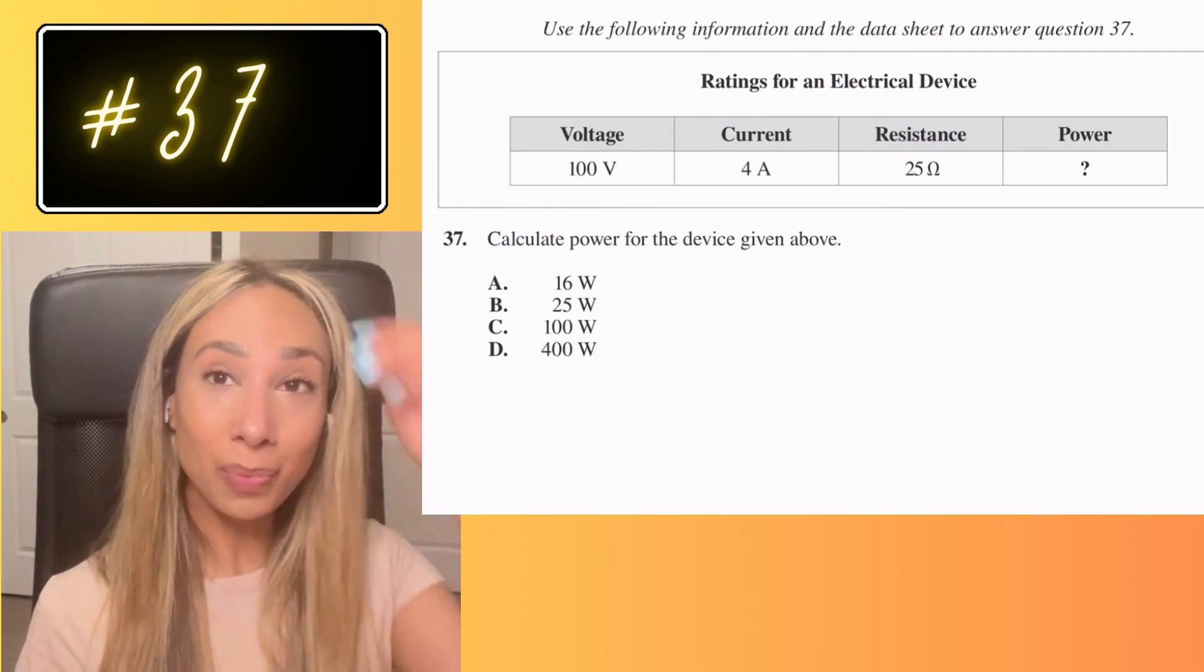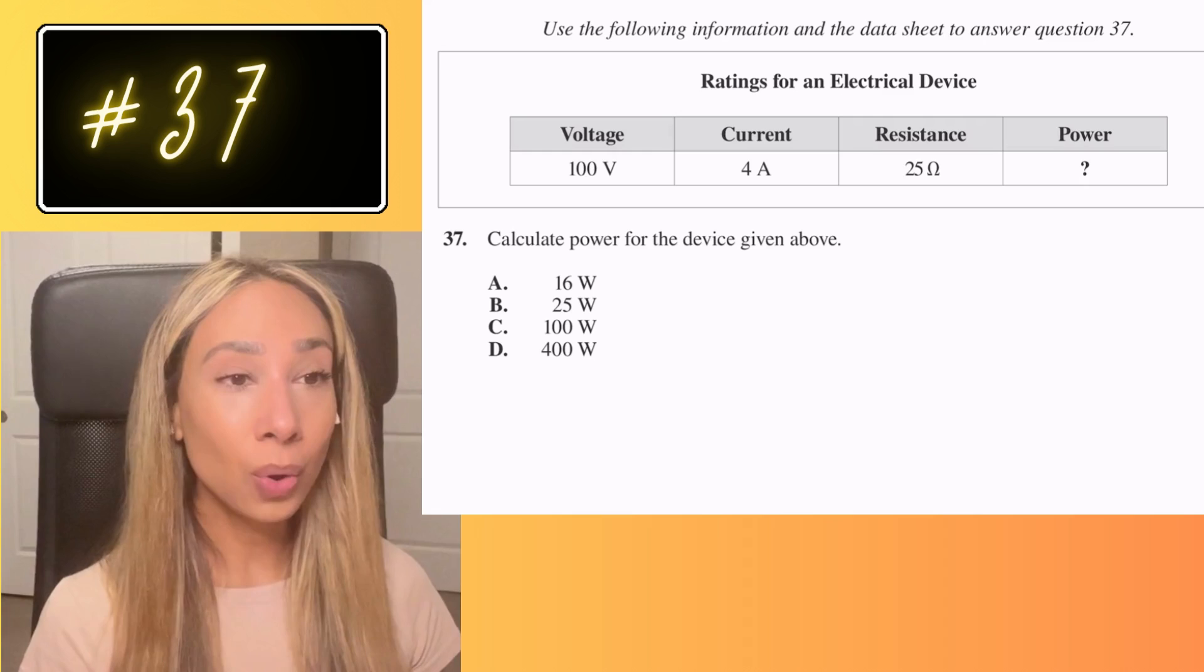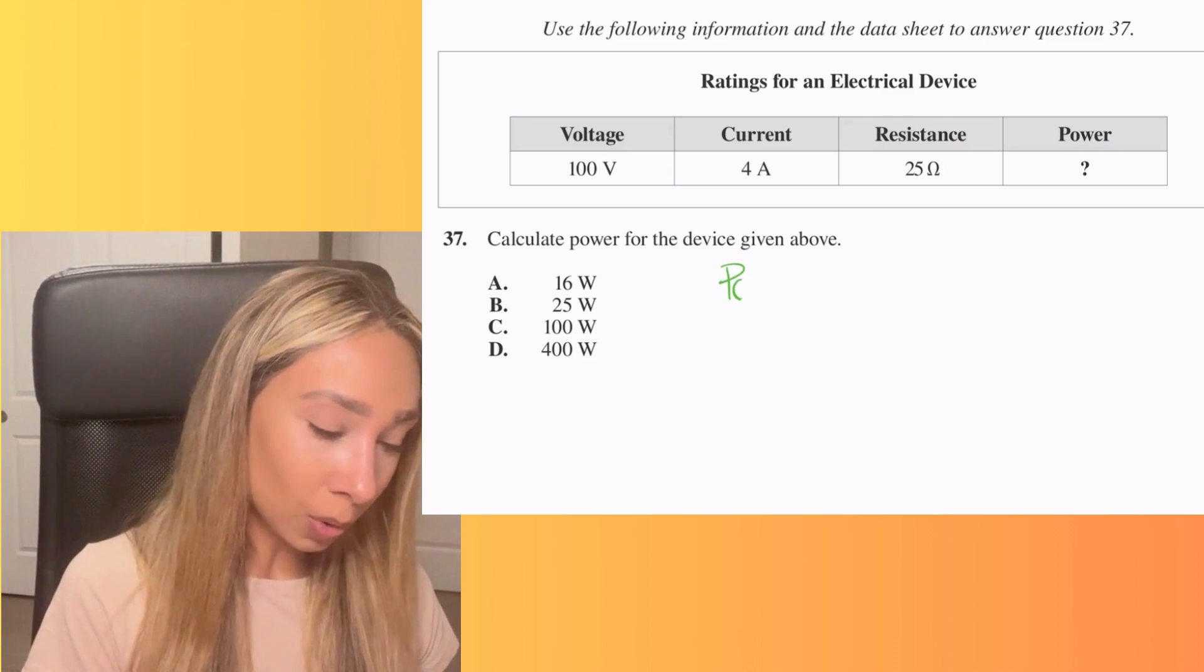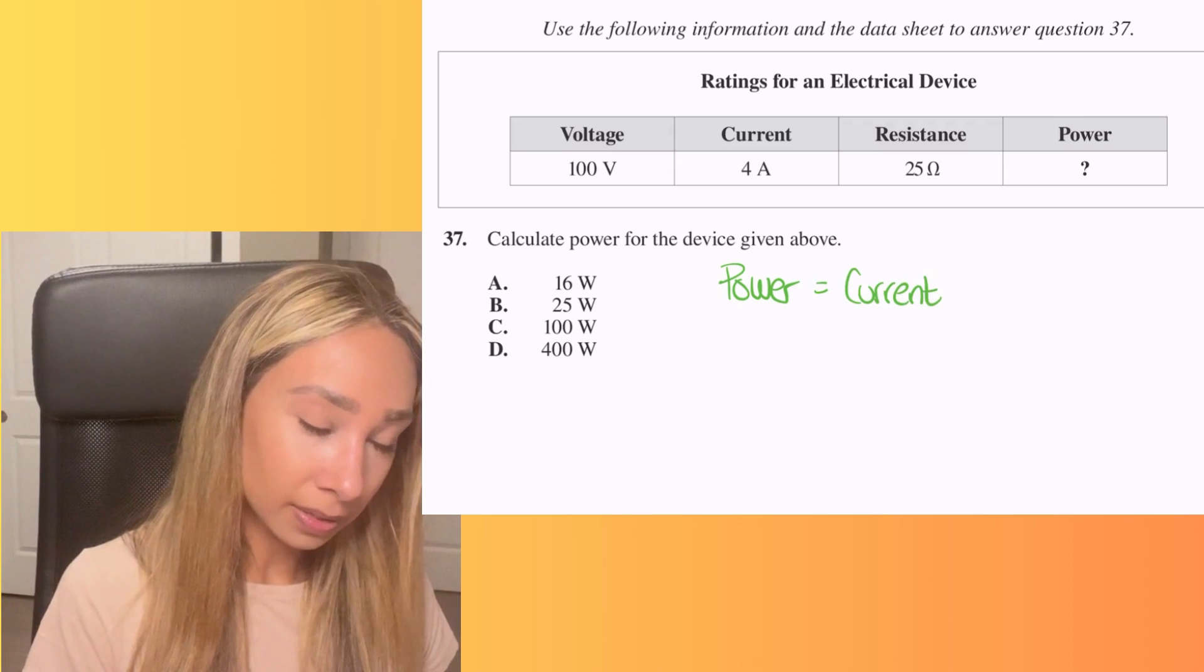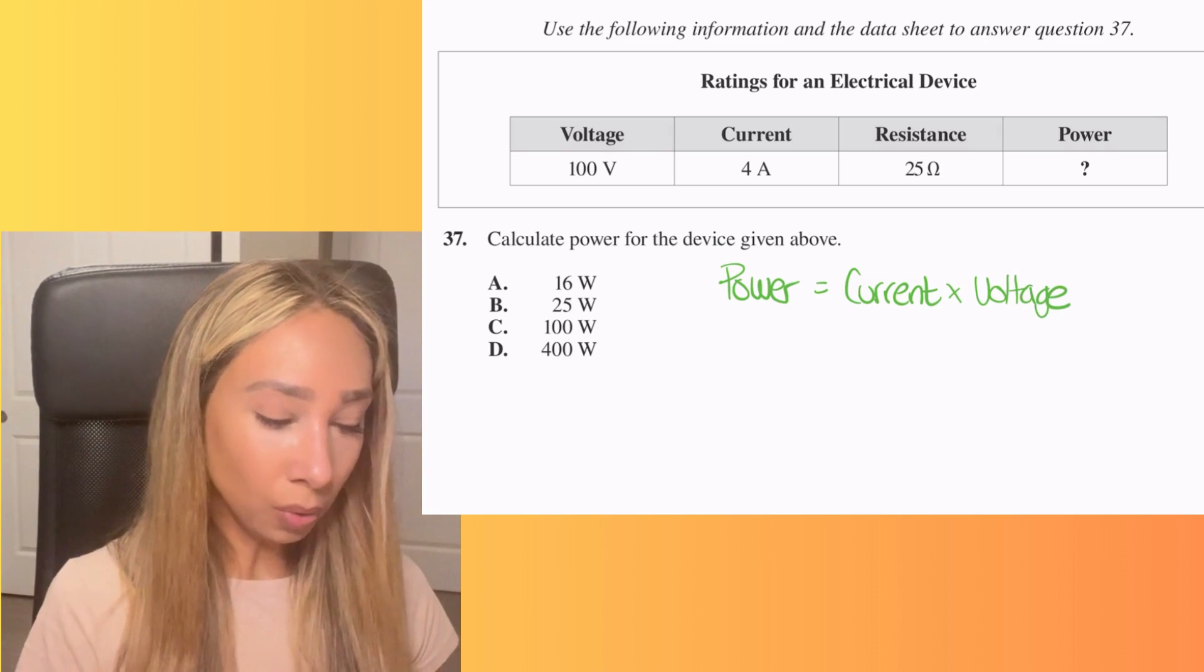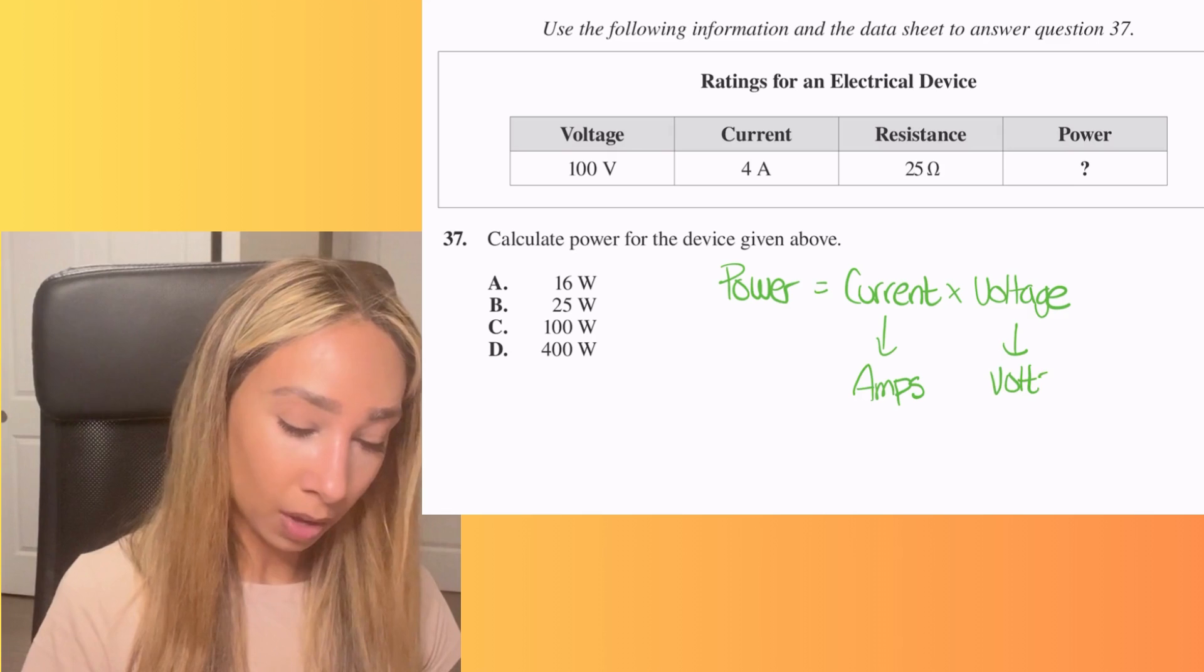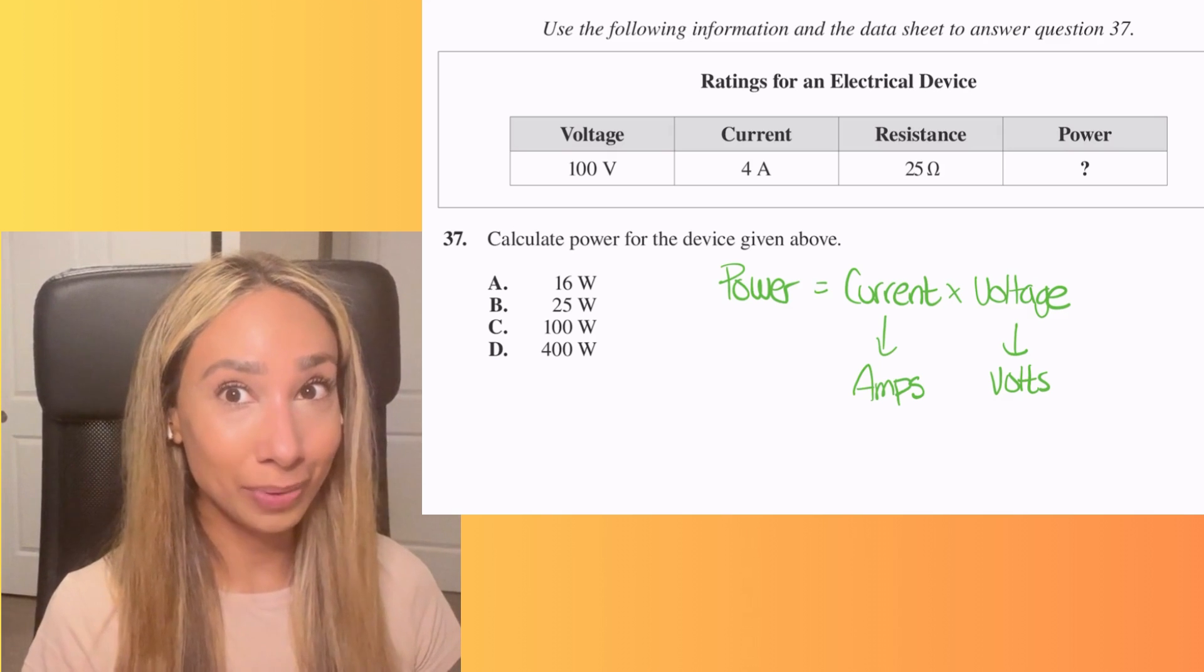Number 37. So this one is actually a math question. So what we need to do is we need to calculate power for the given information above. So the tricky part with this one is we need to recognize that we have to use a formula here. So the formula we are going to use is this one here. So power is equal to current times voltage.